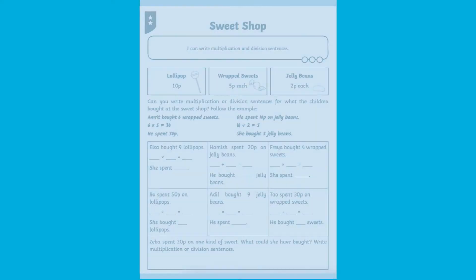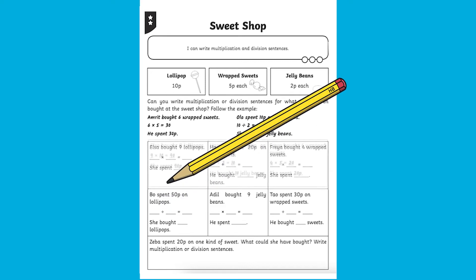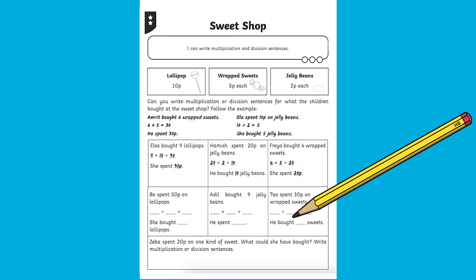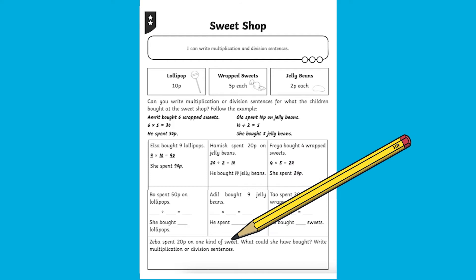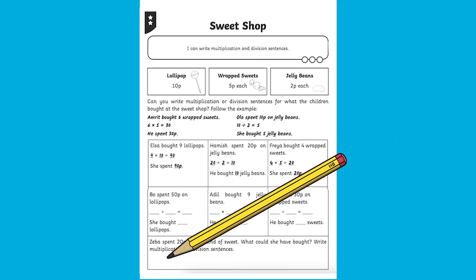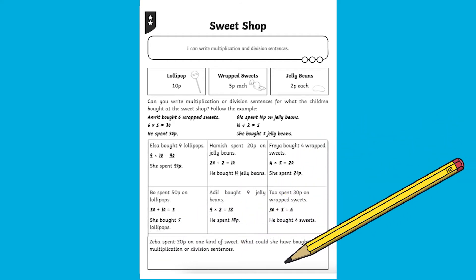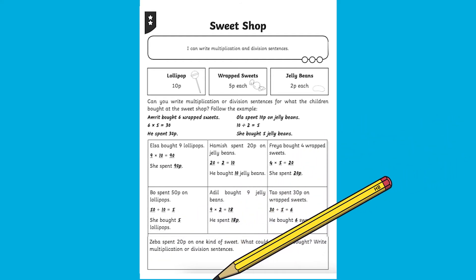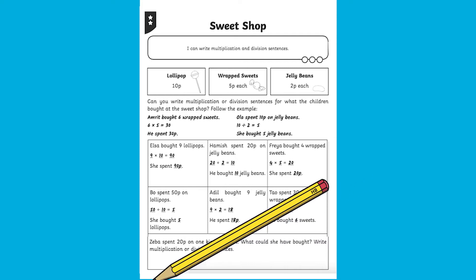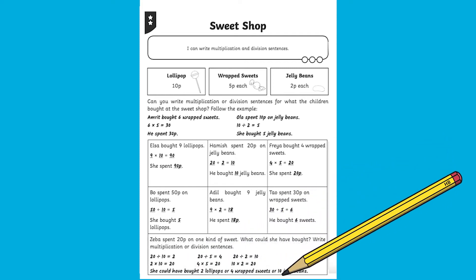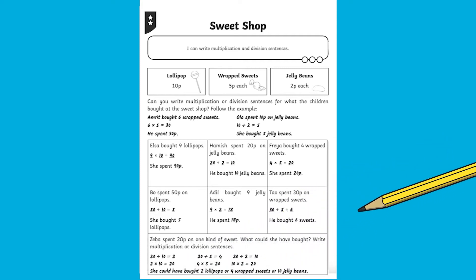One of the activities that your child can have a go at is this sweet shop themed multiplication and division sentences activity. Multiply the cost of the item by the number of items bought. This activity allows your child to apply their reasoning skills to really understand what each number represents.